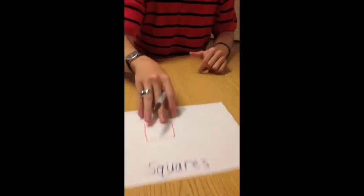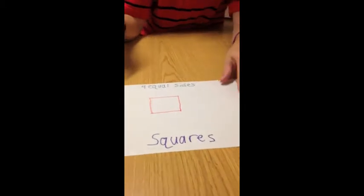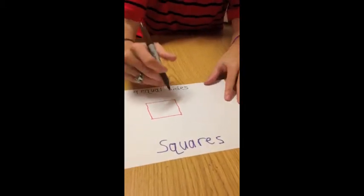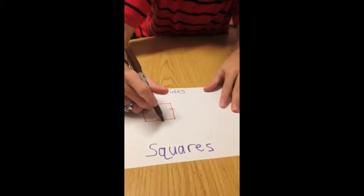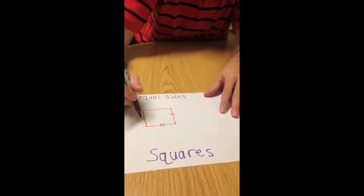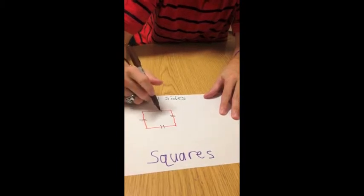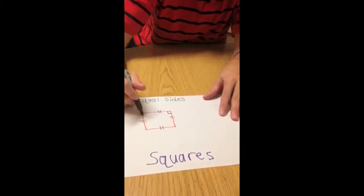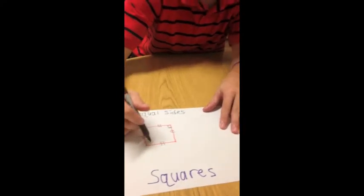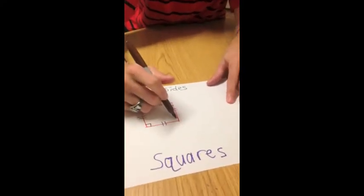The first of the five types of quadrilaterals is the square. The square has four equal sides, and you can also compose it of four right angles.